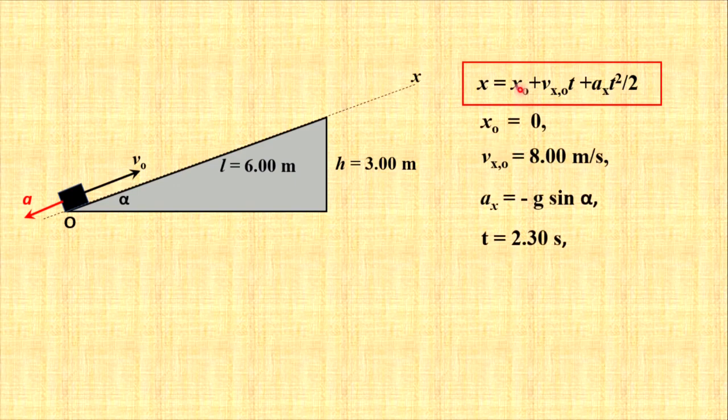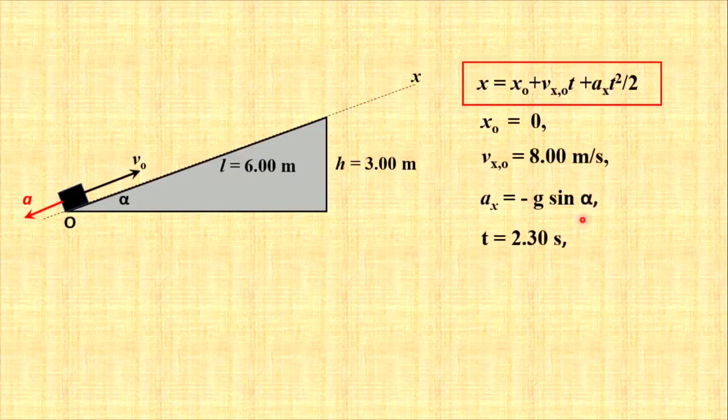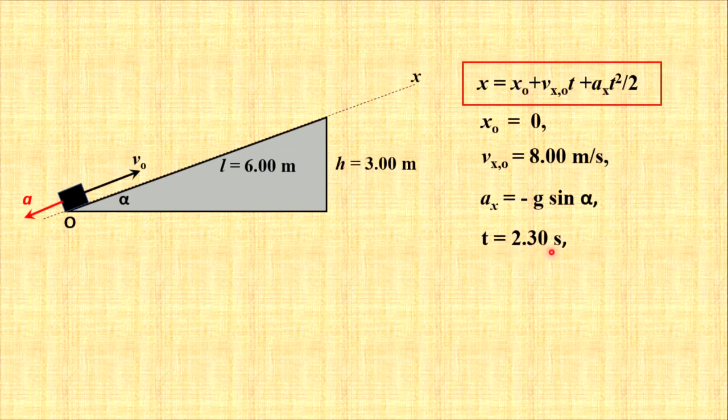Initial position of the object is at zero, so at origin. Initial velocity, which in our case is x component of v₀, is 8 meters per second. And acceleration, as we know, is negative g sine alpha. We don't know alpha, but we will calculate it. The time which is involved in this equation is 2.3 seconds.